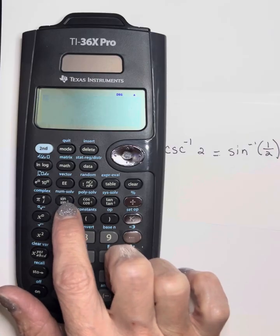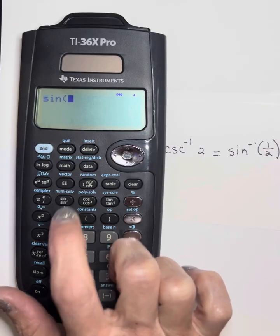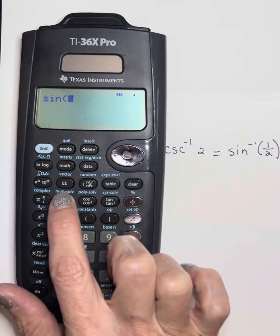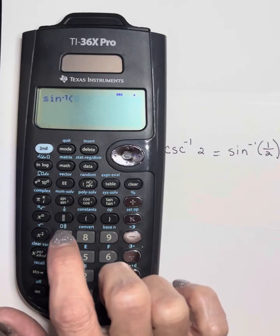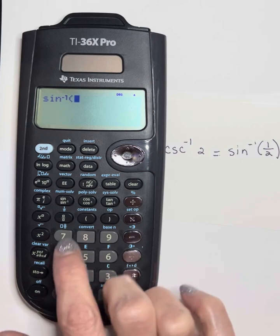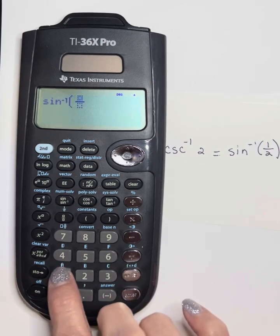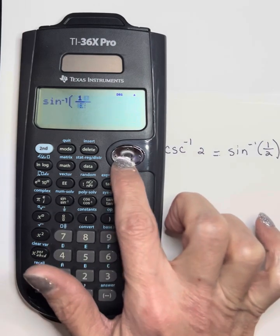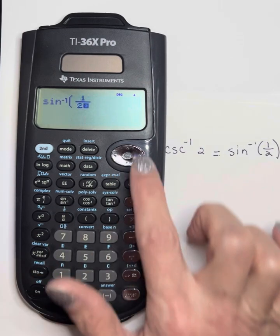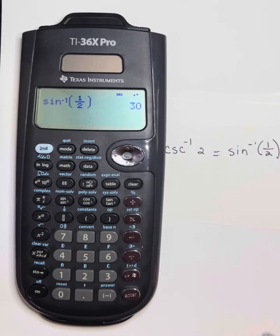If I do sine inverse — pressing that trig function button twice, once for sine and again for sine inverse — and then put in 1 over 2, I get 30 degrees.